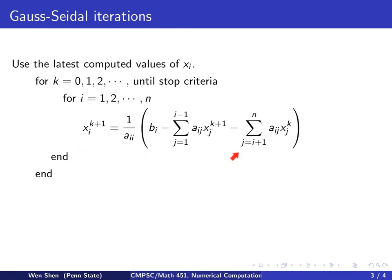This is the same as the Jacobi iteration, except for this summation sign, we have a new thing here that is this k plus 1. That's new, so we're using the newly computed value.